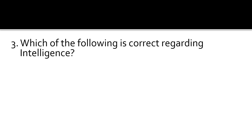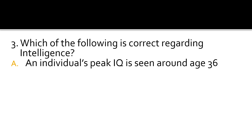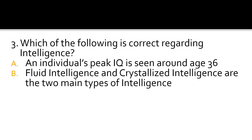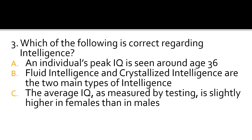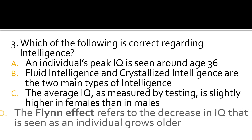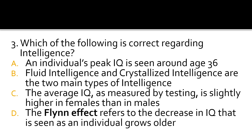Question 3. Which of the following is correct regarding intelligence? A: An individual's peak IQ is seen around the age of 36. B: Fluid intelligence and crystallized intelligence are the two main types of intelligence. C: The average IQ is slightly higher in females than in males. D: The Flynn effect refers to the decrease in IQ seen as an individual grows older. The correct answer is B.